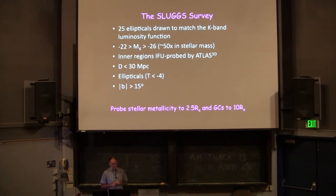So Jean spoke a little bit on Monday about the SLUGS survey. Here we're looking at 25 nearby elliptical galaxies. Most of their inner regions have been probed by the Atlas 3D survey. What we're doing is using the DMOS spectrograph on Keck and effectively using it as an integral field unit, but that gives us a wider field of view. So we're probing as well as kinematics, stellar metallicities out to about two and a half effective radii. We're also looking at the globular clusters as traces of halos of early type galaxies, and that gets us out to about 10 effective radii.